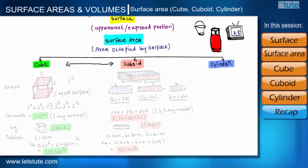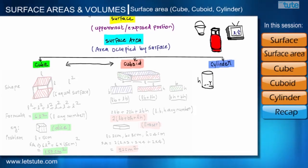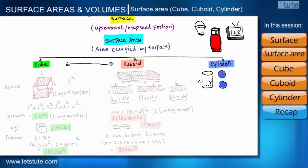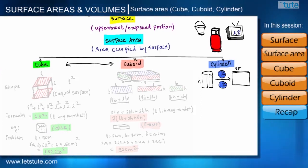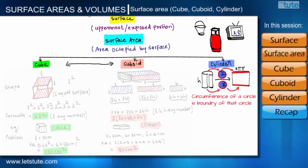Our third and last shape of this session is a right circular cylinder. Suppose this cylinder has height H and radius R. The top and bottom surfaces are in the shape of a circle. If we take out the top and bottom surfaces, we get two circles and our original cylinder becomes a pipe open from top and bottom. If we then cut the cylinder and open it up, we get a rectangle.